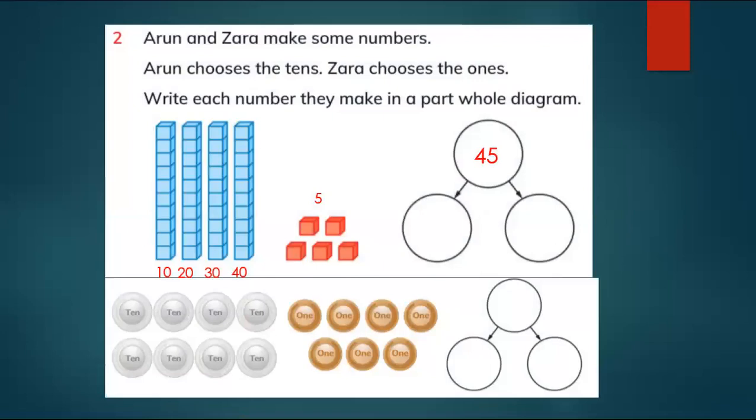In the next exercise we talked about the tens and ones. So Arun and Zara make some numbers. As you can see Arun chooses the tens.